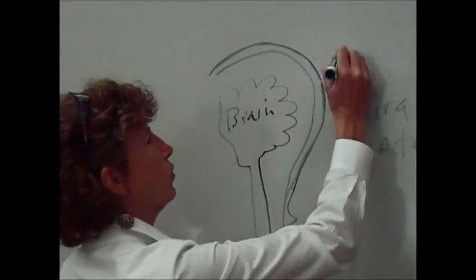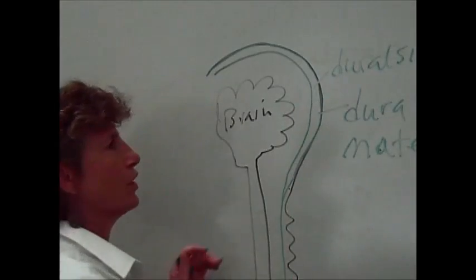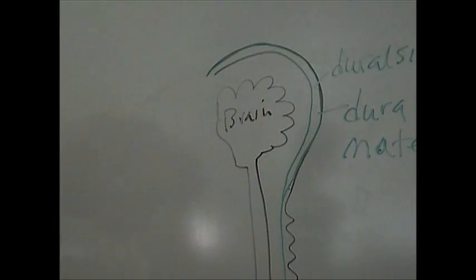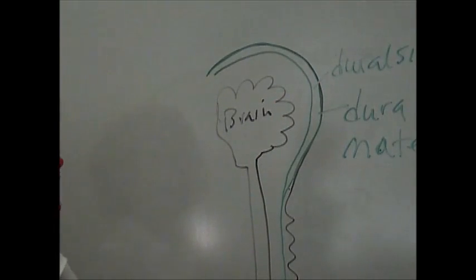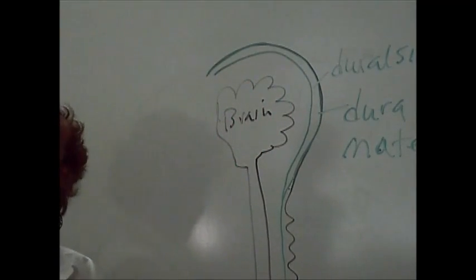It opens up and forms what we call the dural sinuses in between these two layers, and we'll come back to that later when we talk about the arachnoid villi. But just remember, it's that tough outer coating. It's two layers, and it's very thick.